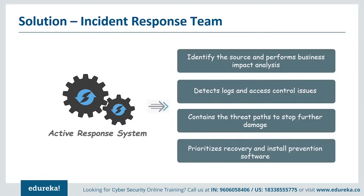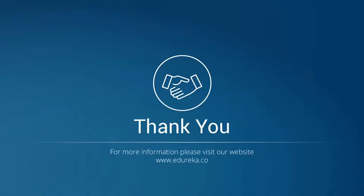Today, cybercrime is so sophisticated it seems almost impossible to prevent. The emphasis is now on how an organization responds once it has been breached. While we can't prevent every incident, we can control how we manage the aftermath so that we're prepared and practiced in the process of response. I hope this session was informative and now you know your role as an individual in ensuring cyber security. If you have any doubts or topics you want to discuss, please post them in the comments below and we'll get back to you as soon as possible.